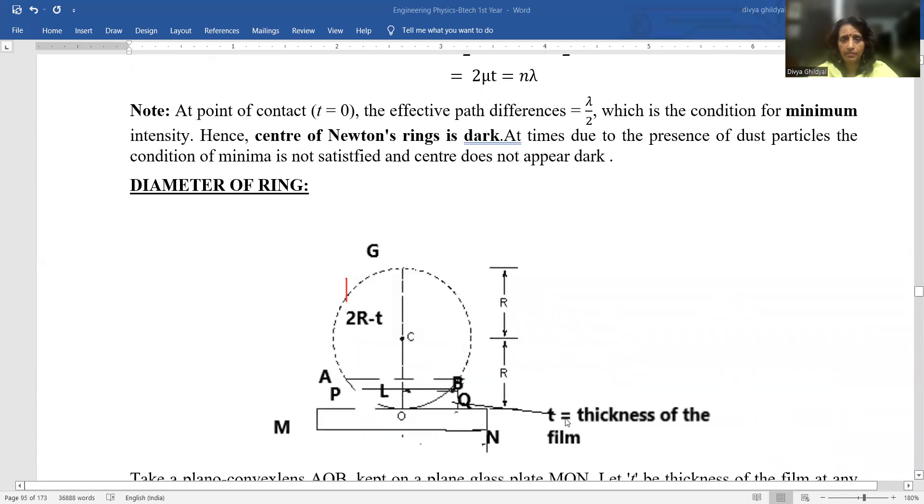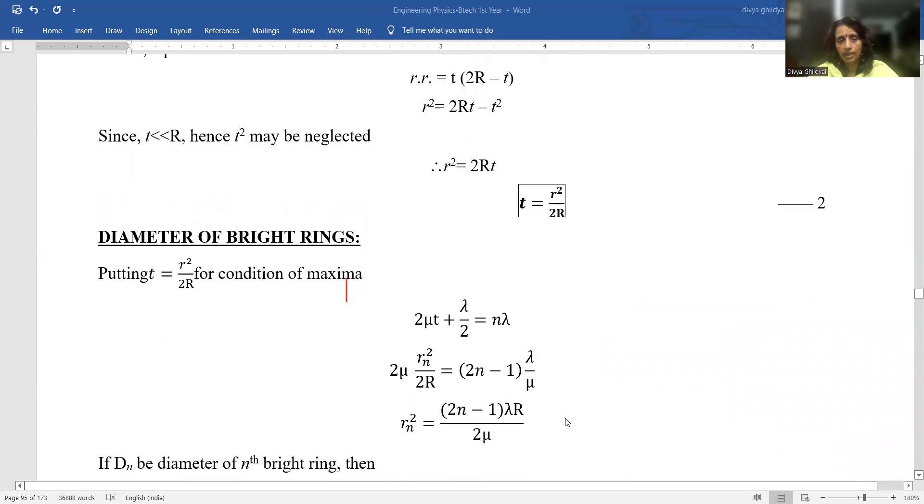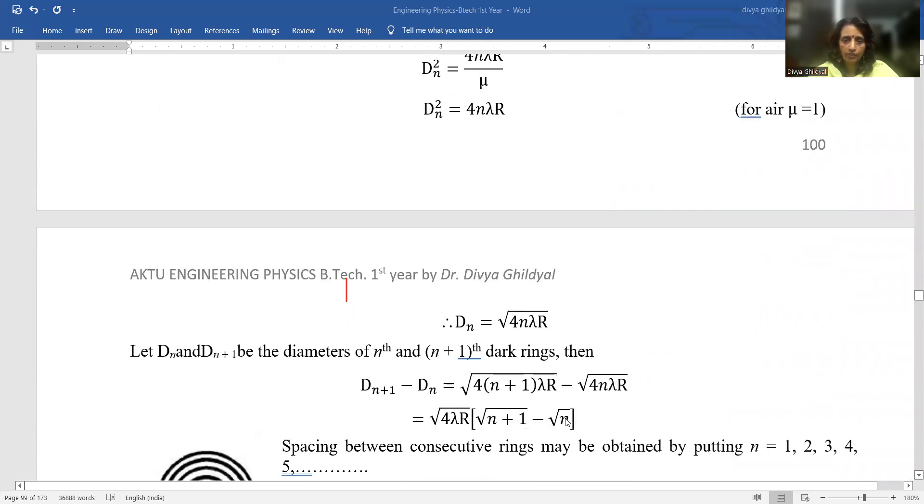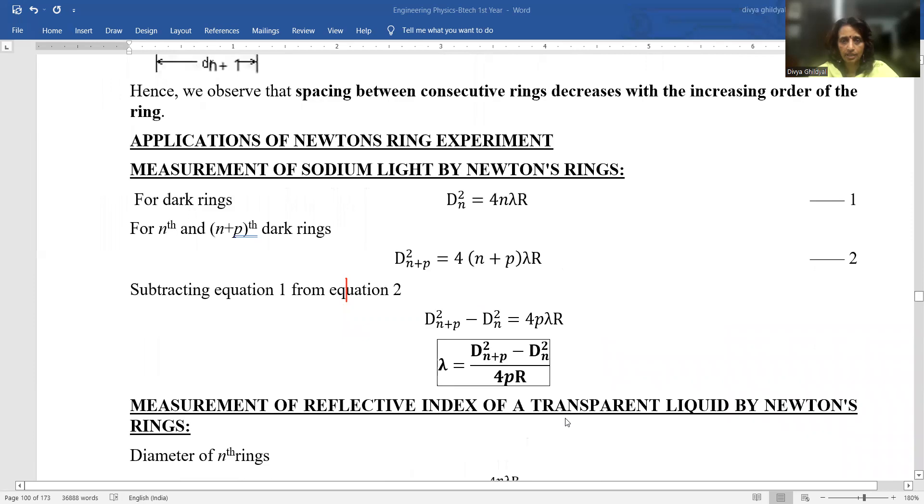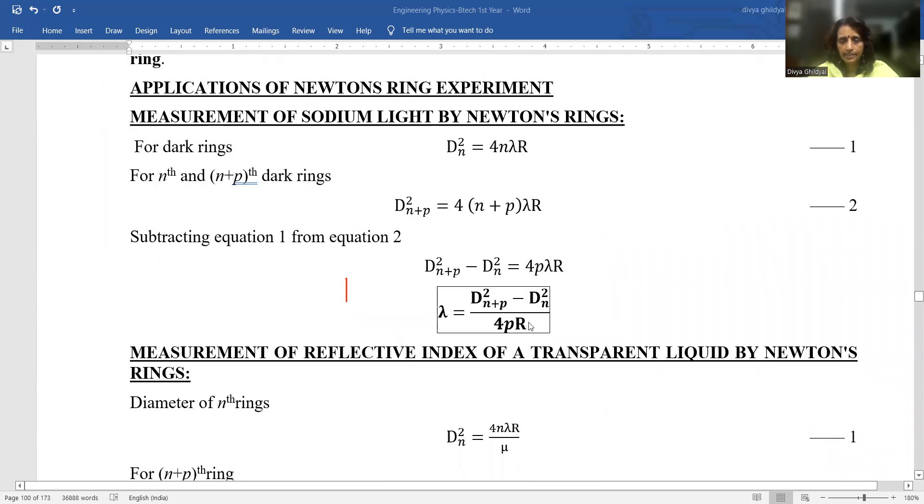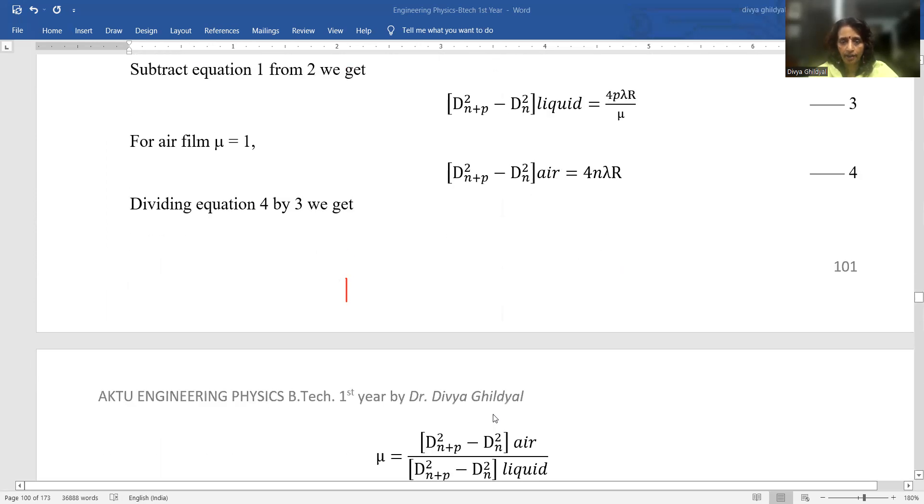Then, Newton ring experiment we studied that the formula for wavelength when we sit down to find for Newton ring experiment comes out as λ = (D²N+P - D²N)/4PR.